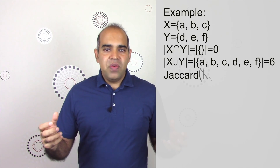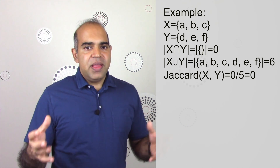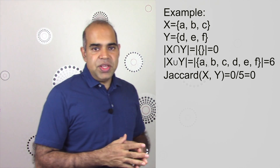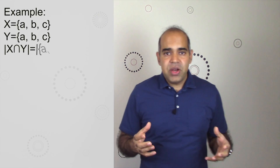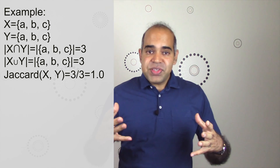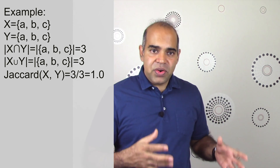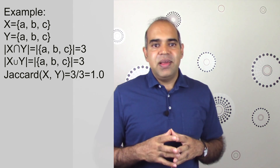Jaccard similarity varies between zero and one. A value of zero indicates no similarity between the two sets — that is, Jaccard is zero when there is no intersection or when there is an empty intersection. A Jaccard index of 1.0 indicates that the two sets are the same, so their intersection and union are also the same, and since the numerator and denominator are equal, the Jaccard index becomes 1.0. So far, we have discussed the set-based Jaccard index.